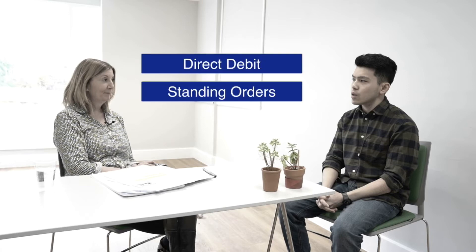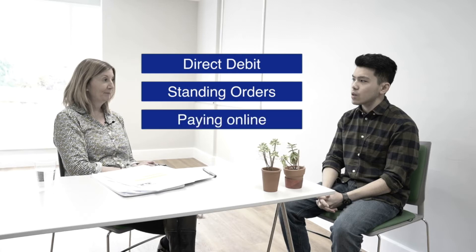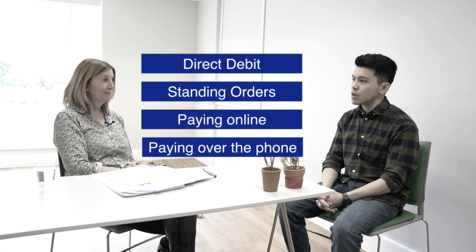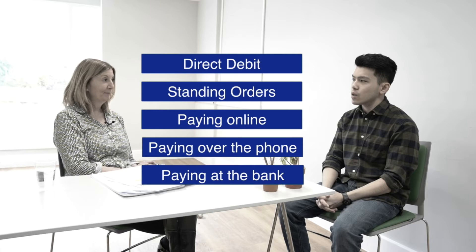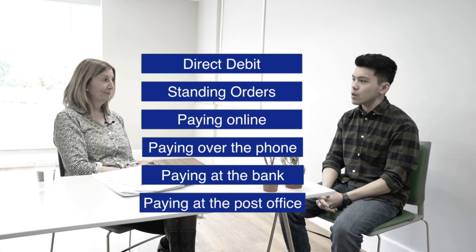There are a few options for methods of payment when it comes to council tax. These are direct debit, standing orders, paying online, paying over the phone, paying at the bank, and even paying at the post office.